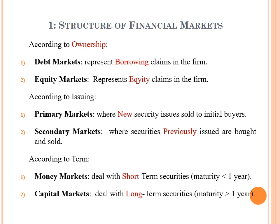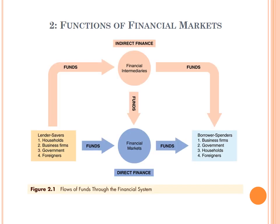So the structure of financial markets covers the categorization according to ownership, according to issuing, and according to term. This is the first point in this lecture — the structure of financial markets. And a very important next point is the functions of financial markets.